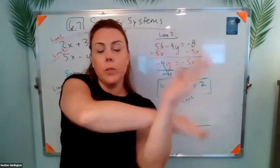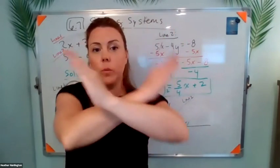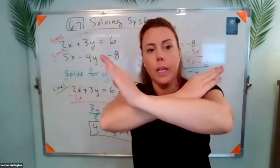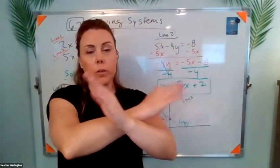And then remember something with one solution is like this. It can be anywhere. It could be here, here, here, but it's going to have an intersection point. So that's one solution.